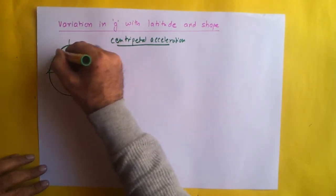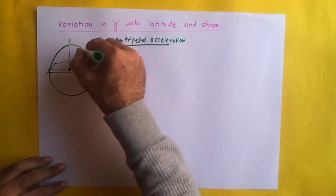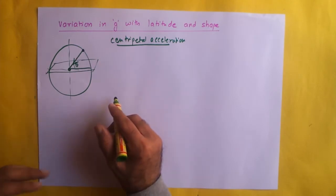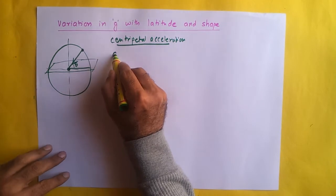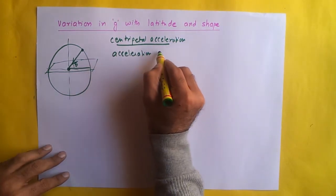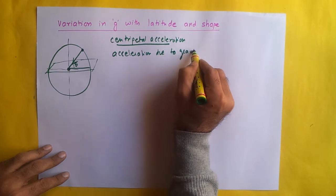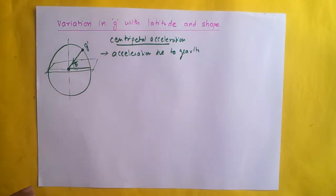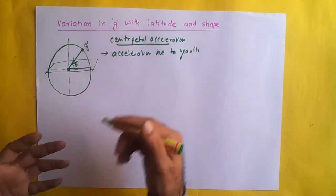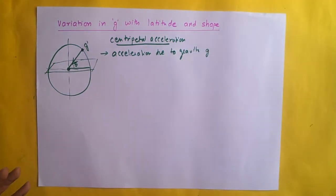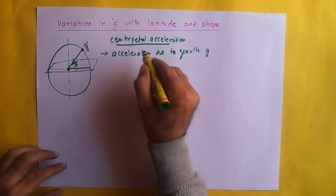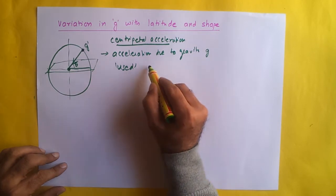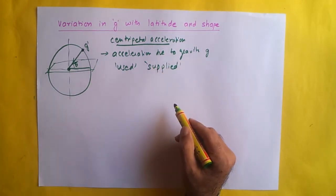So if this object is performing circular motion on the surface of the earth because the earth is rotating, there is a centripetal acceleration directed towards the centre of the earth. So what happens is we have two accelerations now coming into play: the centripetal acceleration and the acceleration due to gravity. The actual value of g, which we can call g dash, is not the same as the value of g, because a part of g is being used for centripetal acceleration.